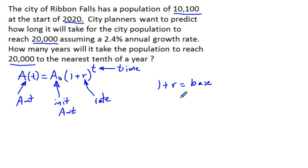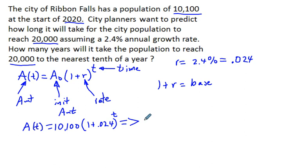Now for this particular situation, we have r equals 2.4%, which is equal to 0.024. So what our equation ends up being is A of t equals our starting amount, which is 10,100, times 1 plus 0.024 to the power of t. We are trying to find out what t is because our final amount is going to be 20,000. That's equal to 10,100 times 1.024 to the power of t.